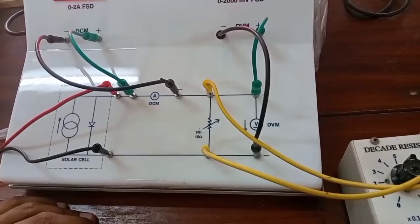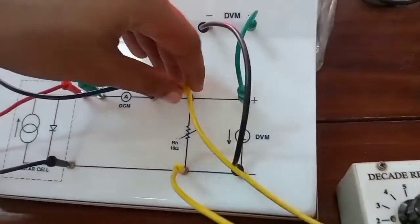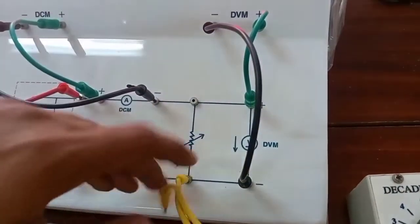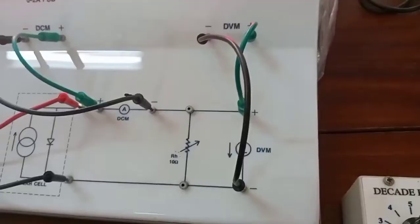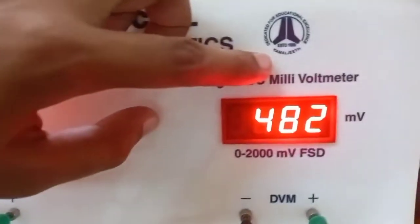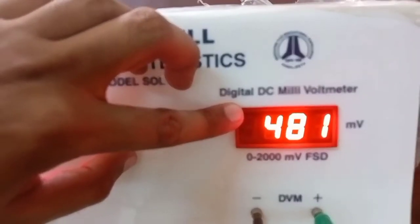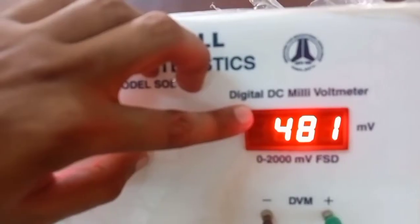Then we want to find the open circuit voltage. To find open circuit voltage, disconnect the rheostat from these terminals. In an open circuit, current is zero and the voltmeter reading is noted. That is VOC, open circuit voltage.